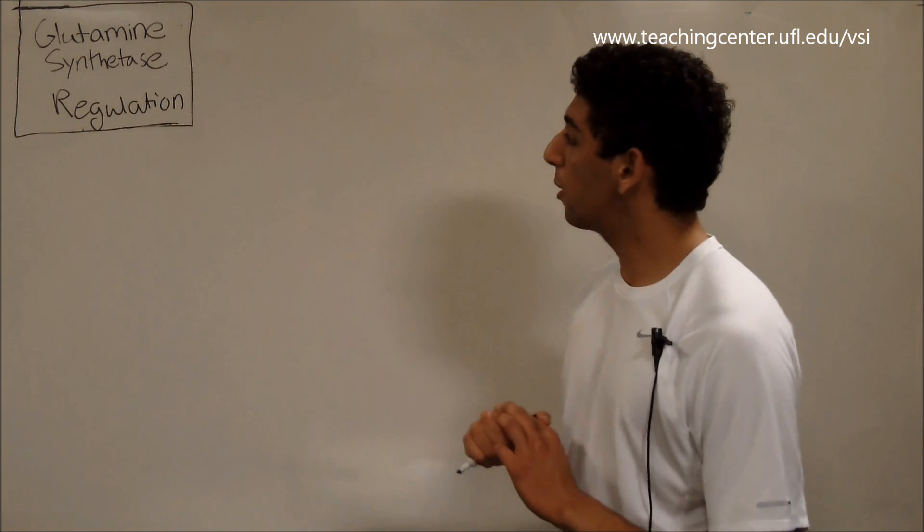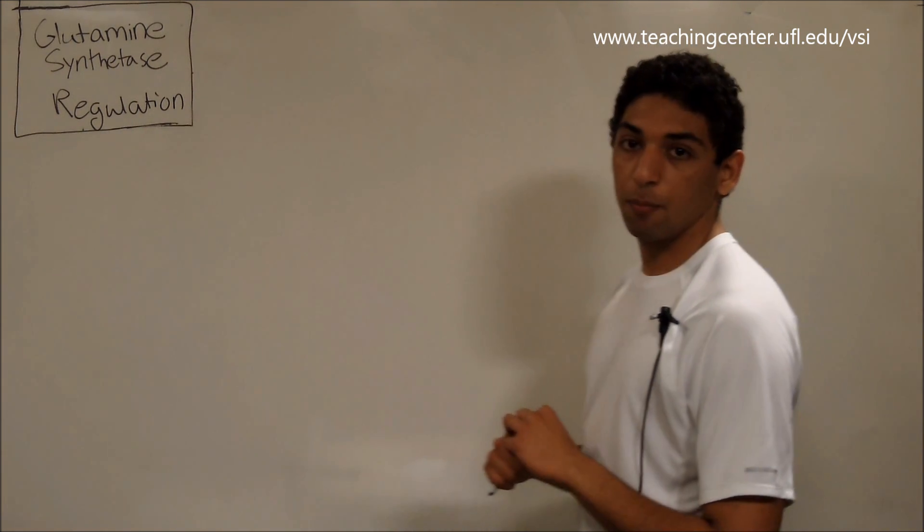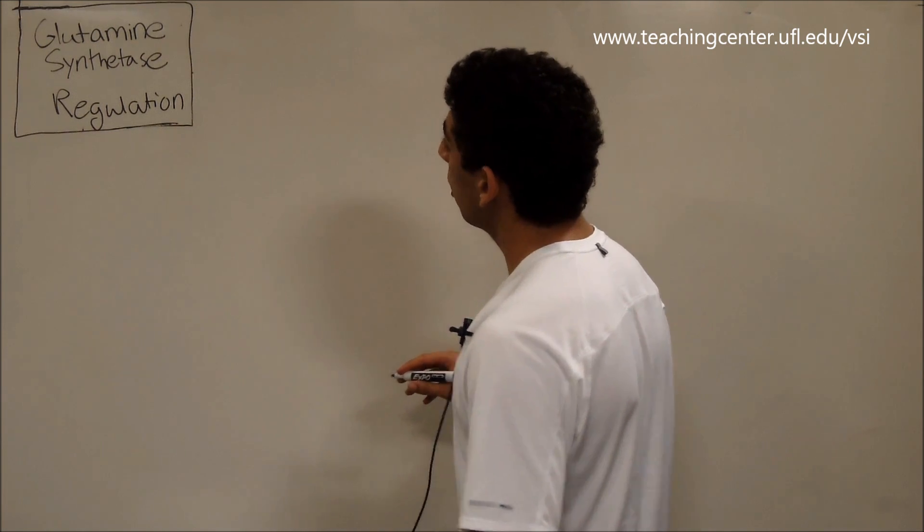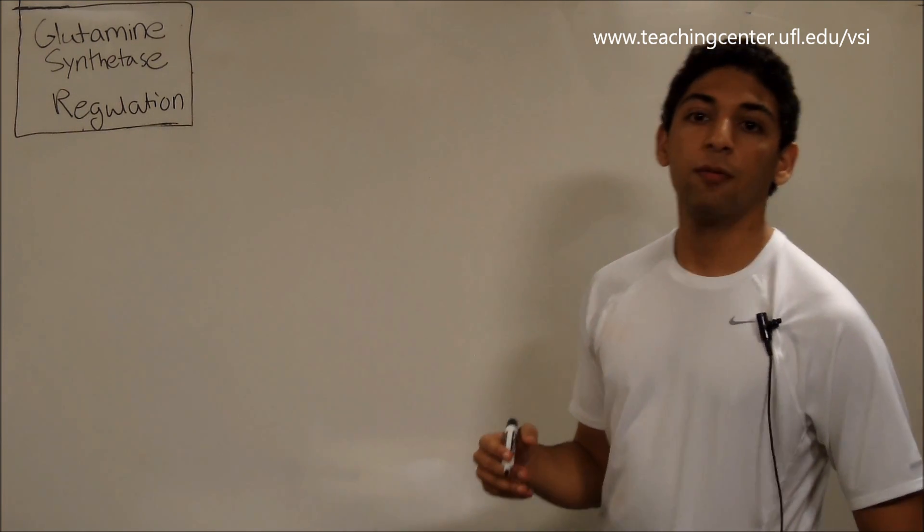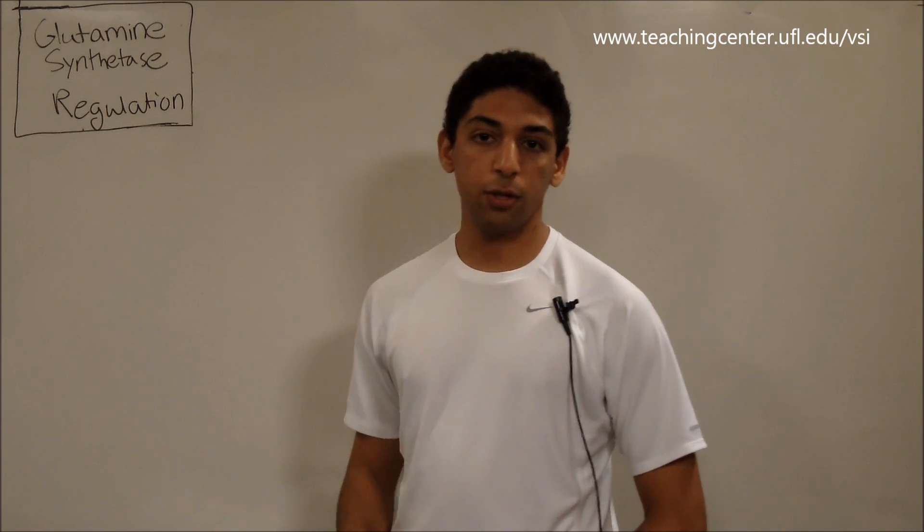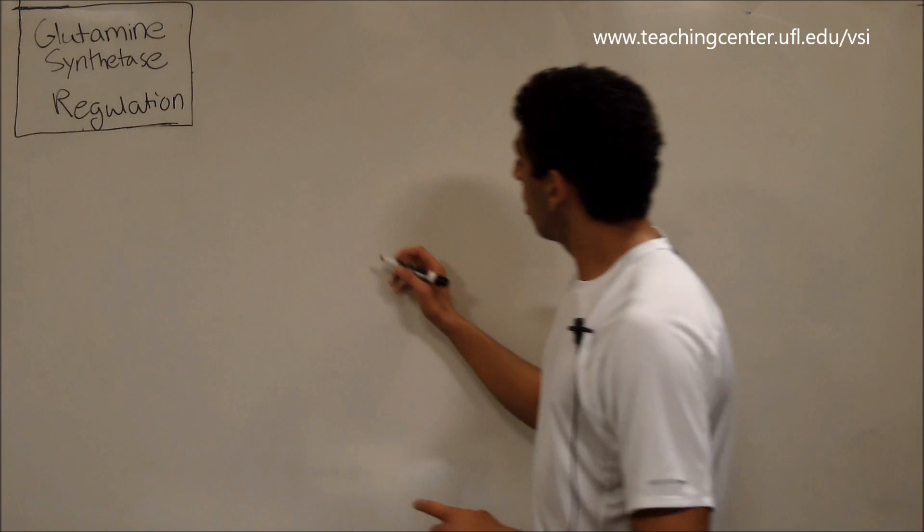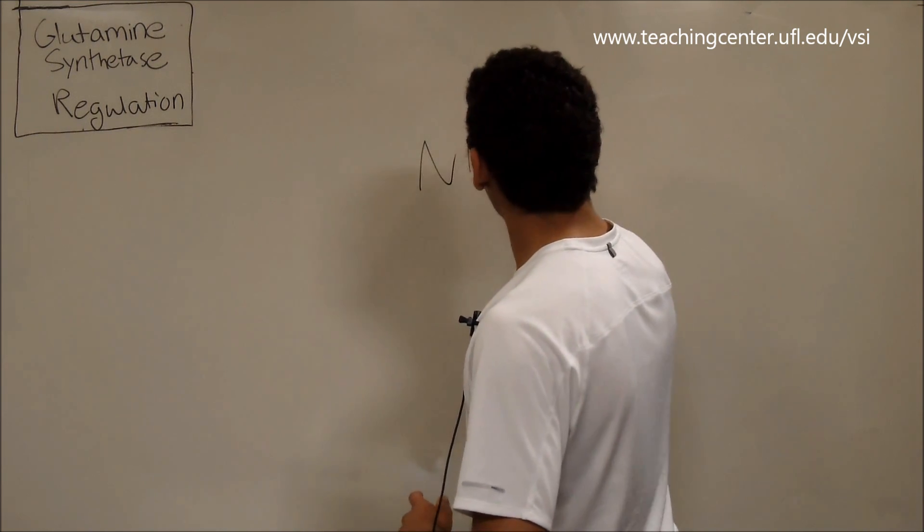Having a good broad understanding of the enzyme is really going to help us make sense of the regulation. So when we make ammonia from the glutamate dehydrogenase reactions and the other ways that we've learned about in this unit, ammonia looks like this.